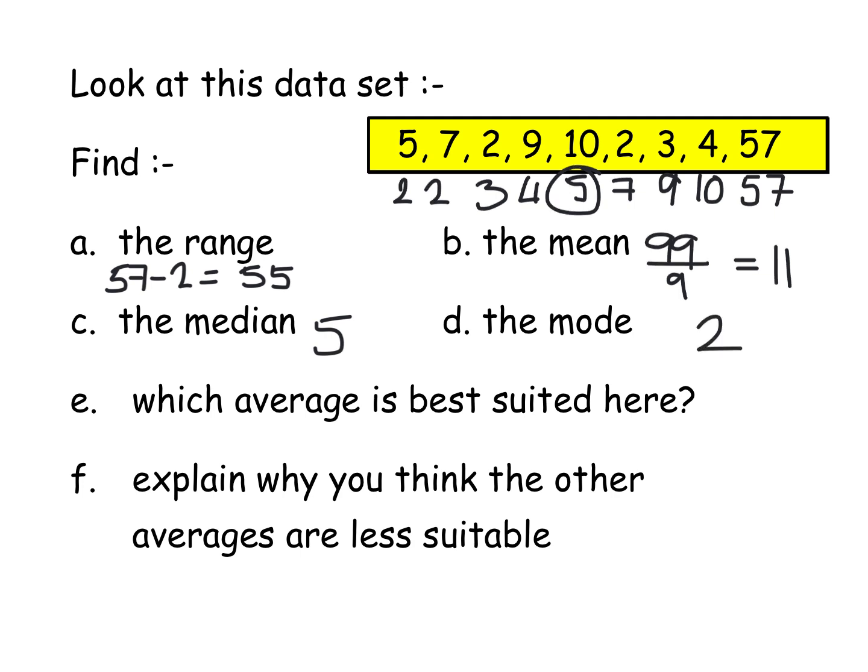Based on these numbers I've given you, some of these averages aren't suitable at all. When I've asked which average is best suited, it's actually easier to do process of elimination and explain why some of the others are no use. I've got 4 answers: 55, 11, 5 and 2, all very different. There's one number in here which is completely affecting my data and I'm hoping you've noticed it. The number is 57. That 57, if that wasn't there, my range would be a lot lower. My mean would be a lot lower. So I'm going to say it's not the range because it's badly affected by the 57.